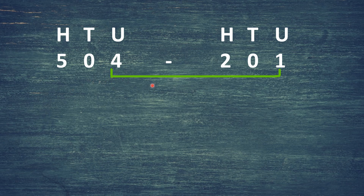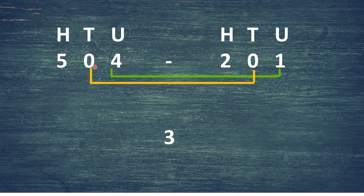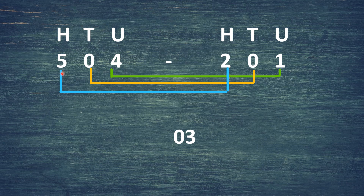Let us solve another example: 504 minus 201. 4 minus 1 is equal to 3. 0 minus 0 is equal to 0. 5 minus 2 is equal to 3. So the answer will be 303. 504 minus 201 is equal to 303.